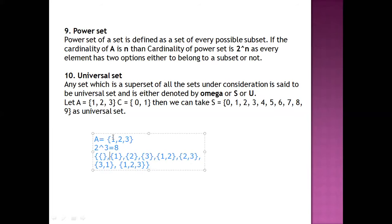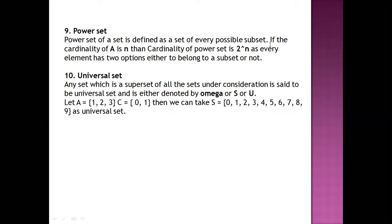Next we talk about universal set. What is a universal set? For example, we have set A and set C. Then we take S. S includes elements 0 to 9.